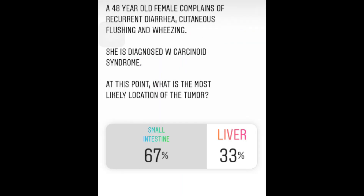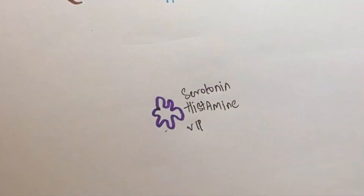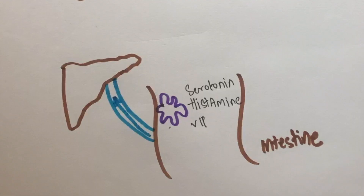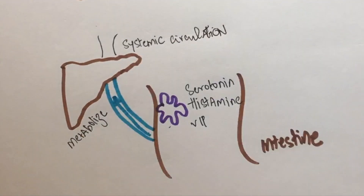A 48-year-old female complains of recurrent diarrhea, cutaneous flushing, and wheezing. She is diagnosed with carcinoid syndrome. At this point, what is the most likely location of the tumor? Carcinoid syndrome arises from a tumor which secretes serotonin, histamine, and VIP. When the tumor is in the intestine, these substances reach the liver before they go to the rest of the body. The liver can metabolize these substances, so there are no symptoms seen when the tumor is confined to the intestine.